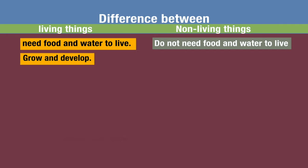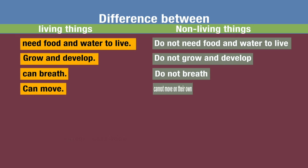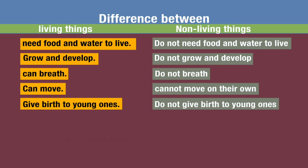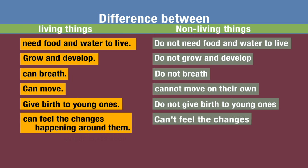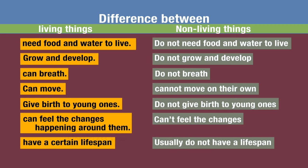Living things grow and develop; non-living things do not grow. Living things breathe; non-living things do not breathe. Living things can move; non-living things cannot move on their own. Living things give birth to young ones; non-living things do not give birth to young ones. Living things can feel the changes; non-living things cannot feel the changes. Living things have a certain life span; non-living things do not have a certain life span.